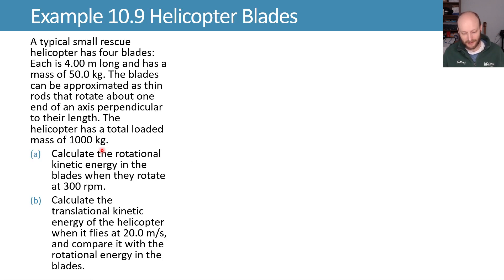Let's say we have a helicopter and it has four blades. Let's draw a sketch of those blades right there. They're four meters long, they're 50 kilograms each, and we're approximating them as thin rods rotating about the end of an axis perpendicular to their length. The total mass of the helicopter itself is going to be a thousand kilograms.